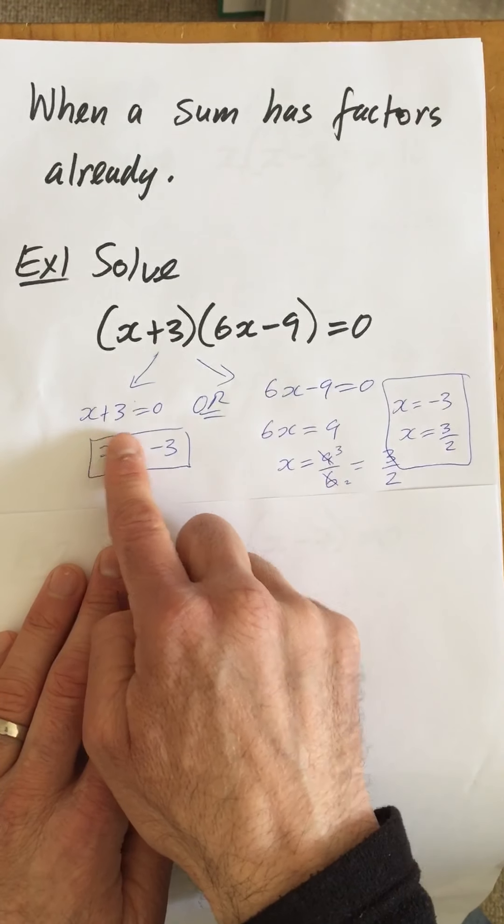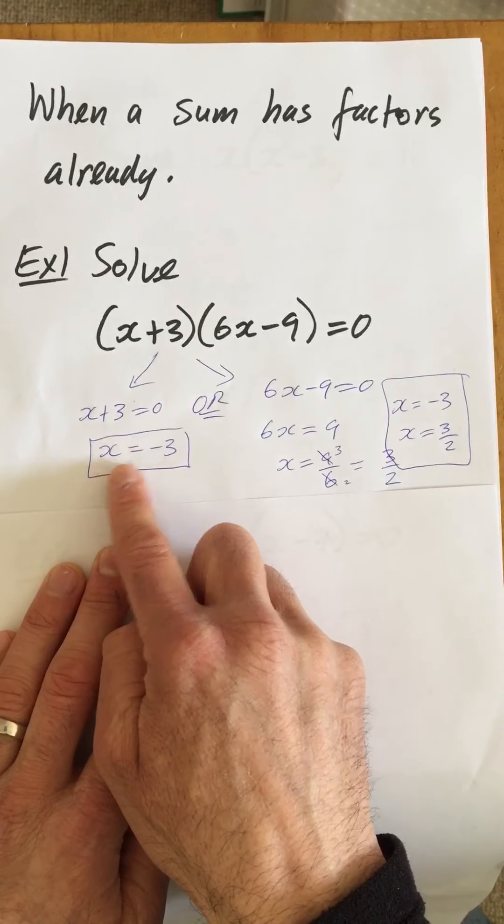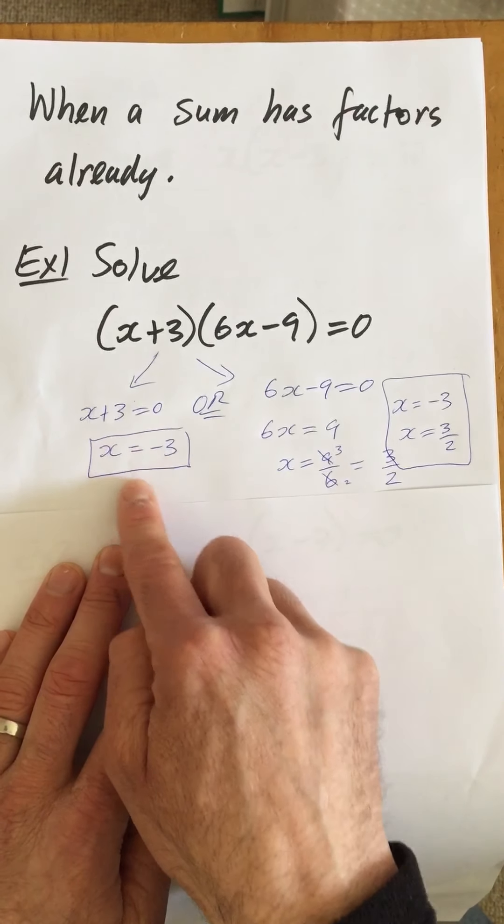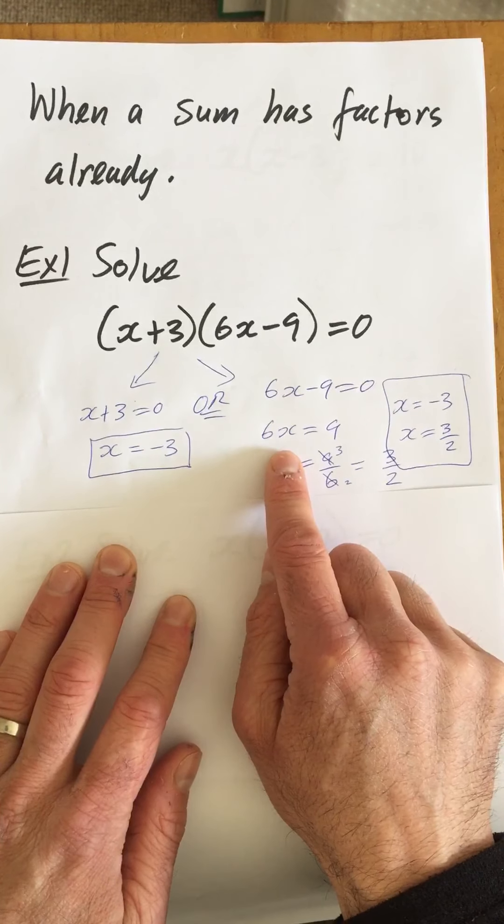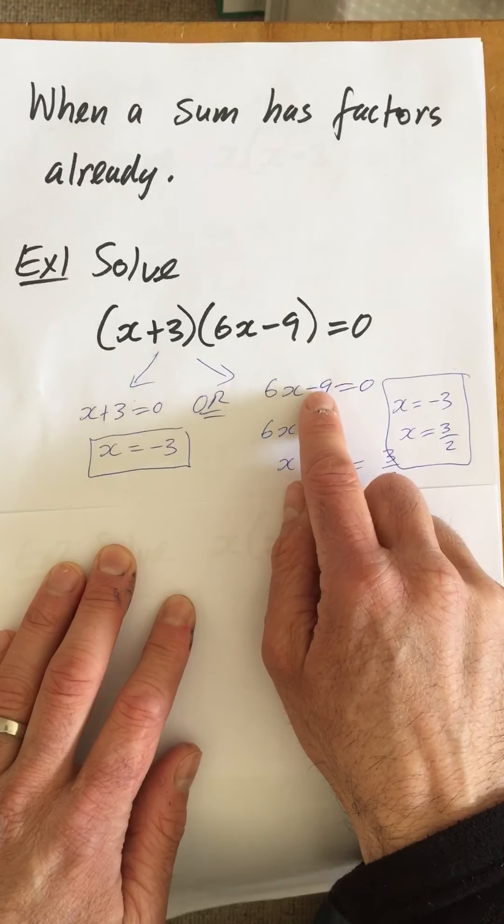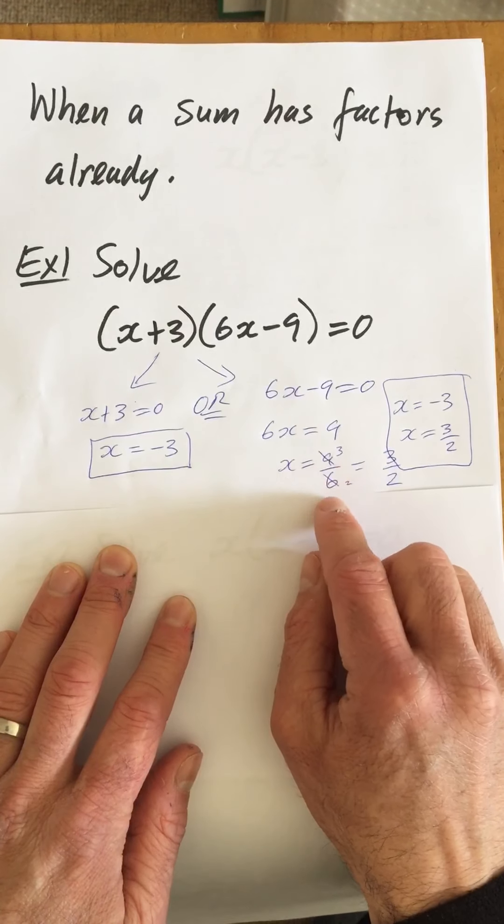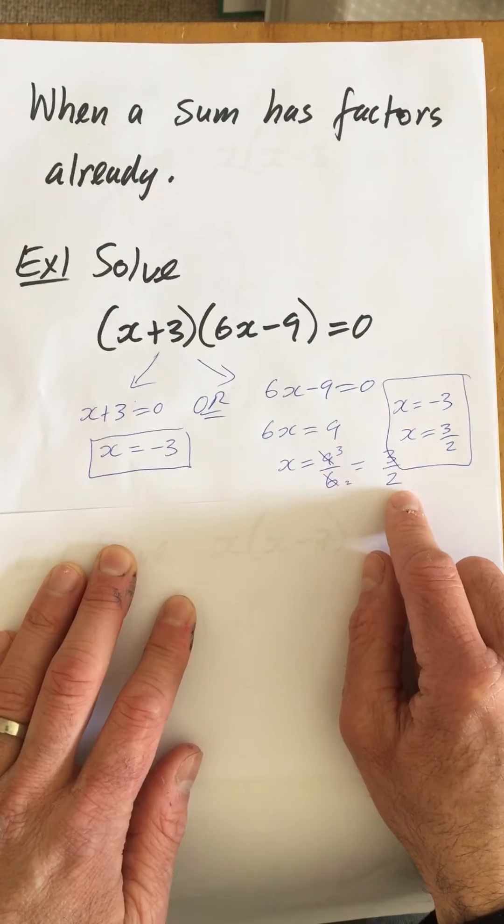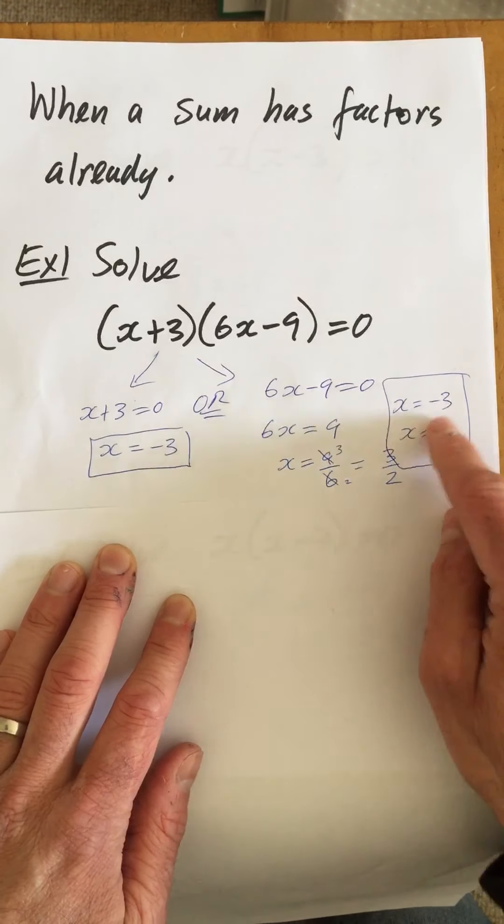And you can see here with this one, x+3=0, we just simply bring the plus 3 over, becomes x=-3. It's one of our answers. And with this one we have to get 6x on its own. So we get 6x=9 because you bring the minus 9 over and you get 9. And then x equals 9 divided by 6, which breaks down to 3/2. So the two answers are -3 and 3/2. They're the roots.